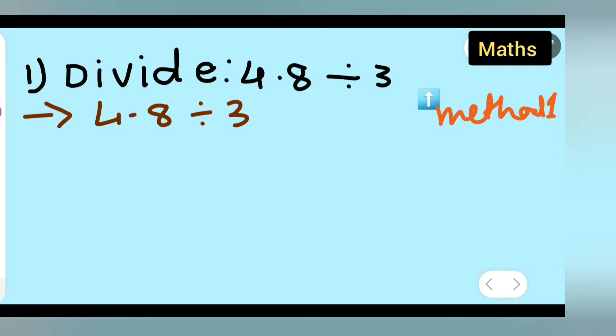Using method 1, write 3 and 4.8 in the division format. 3 ones are 3, so subtract this: 4 minus 3 gives you 1.